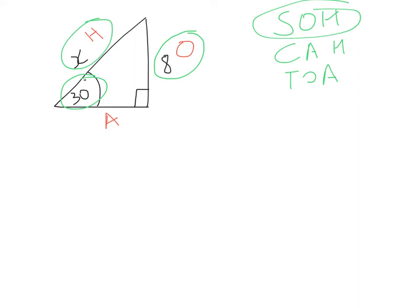Now, I'm going to say to myself, well, out of SO, CA, TOA, which one has an O and a H? And the one that has an O and a H is SO. So, I'm going to write out the proper trig ratio underneath. So, SO, or SINE, A or B or whatever you want to call the angle to begin with, is equals to O over H. Therefore, SINE of the angle, which is 30 degrees, is equals to O, which is 8 over H, which in this case is X.